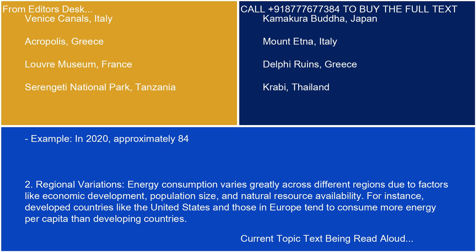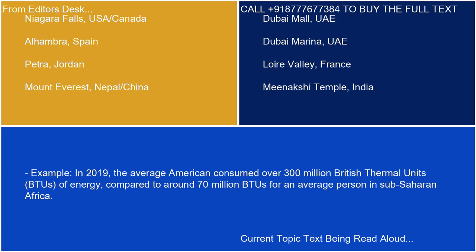Regional Variations: Energy consumption varies greatly across different regions due to factors like economic development, population size, and natural resource availability. For instance, developed countries like the United States and those in Europe tend to consume more energy per capita than developing countries. In 2019, the average American consumed over 300 million BTUs of energy, compared to around 70 million BTUs for an average person in sub-Saharan Africa.